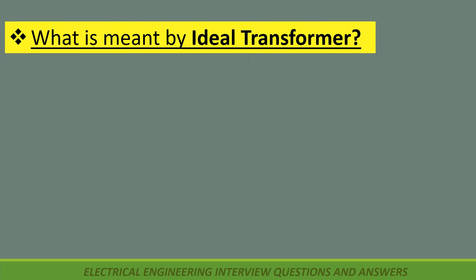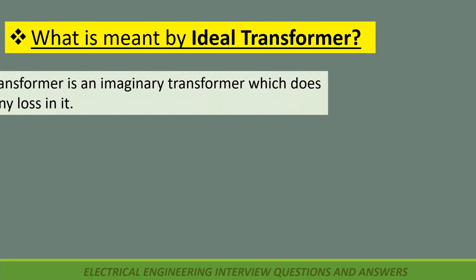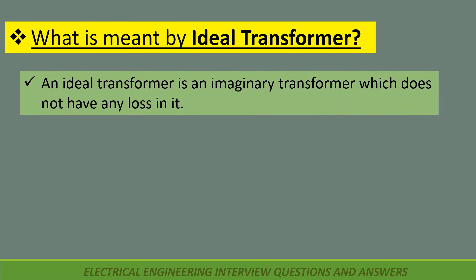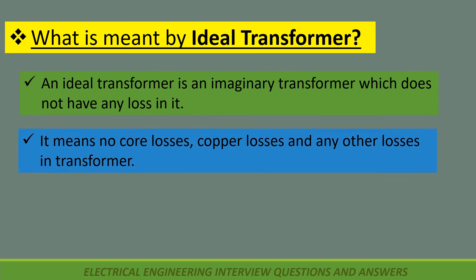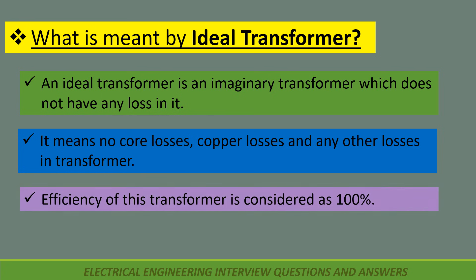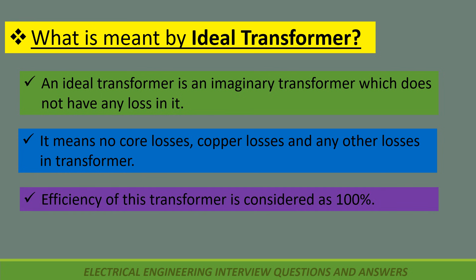What is meant by ideal transformer? An ideal transformer is an imaginary transformer which does not have any loss in it — meaning no core losses, copper losses, or any other losses. The efficiency of this transformer is considered as 100 percent.